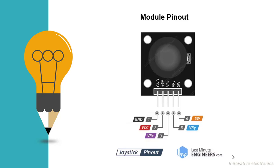SW is the output from the push button. It's normally open, meaning the digital readout from the SW pin will be high. When the button is pushed, it will connect to GND, giving output low.